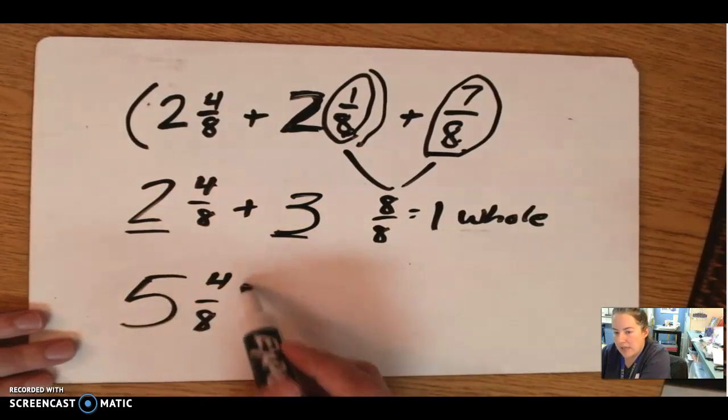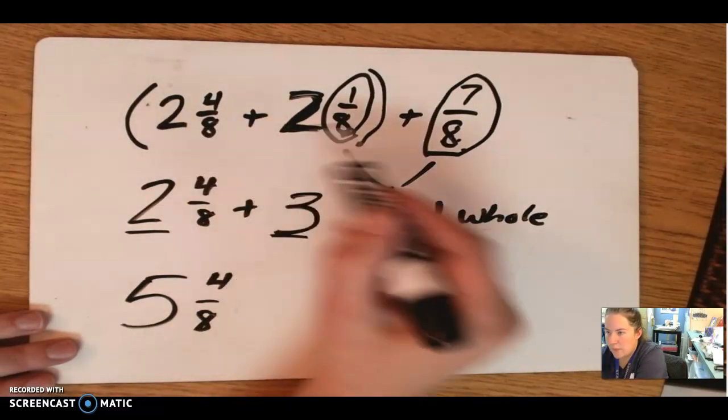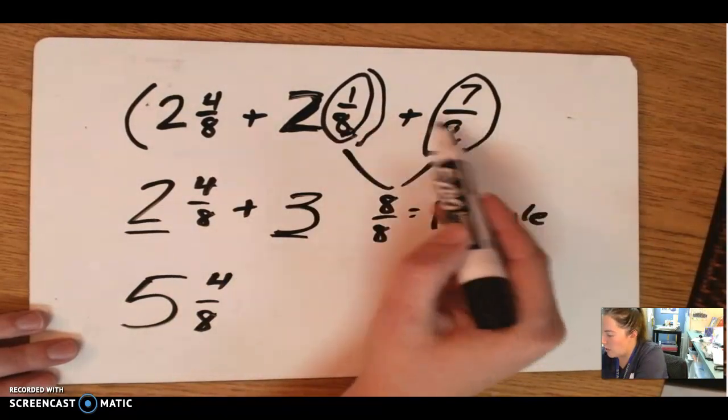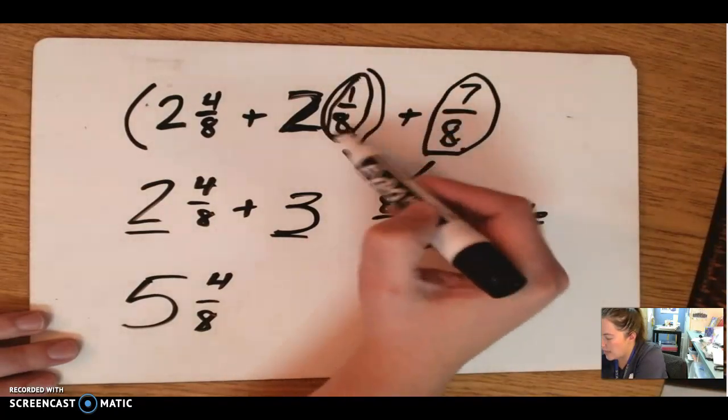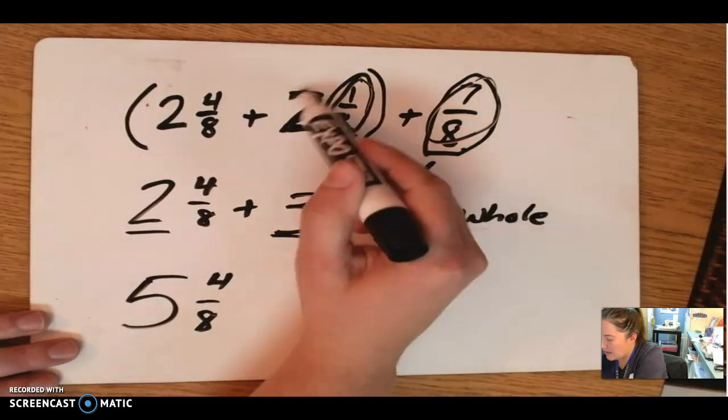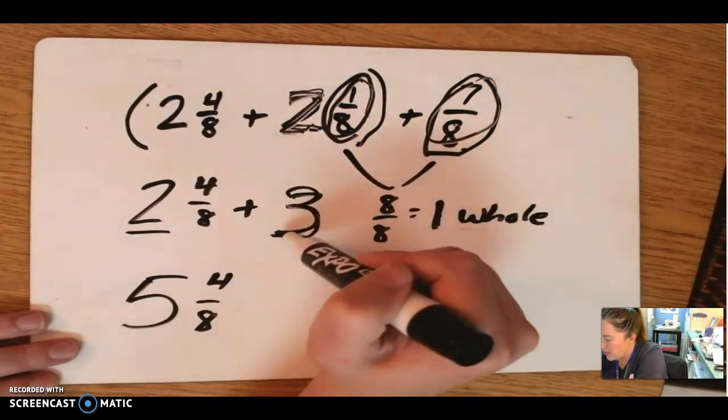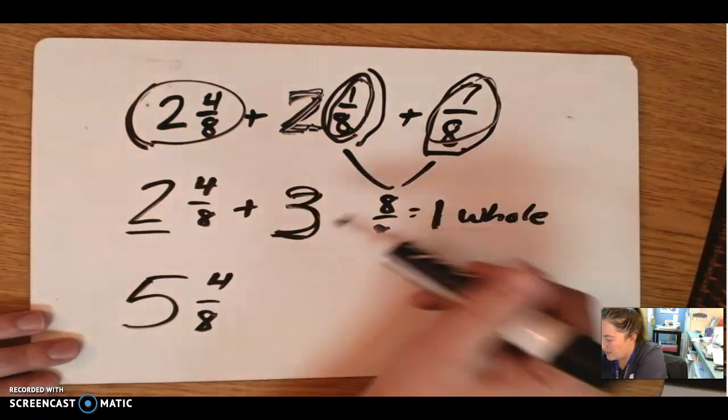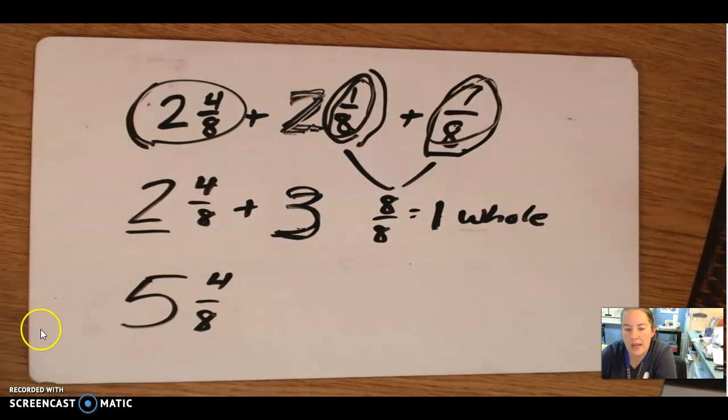So 3 plus 2 is 5, and the fraction piece that's left over is 4 eighths. So I have 5 wholes and 4 eighths, and I did that by not adding these first, but I looked to see, oh, that would make a whole. 7 eighths plus the 1 eighths. I'm going to turn these 2 pieces into 1. I'm going to add that 1 to these 2. So those 2 plus 1 is 3, and just add it to this piece left over. 3 plus 2 and 4 eighths is a total of 5 and 4 eighths.